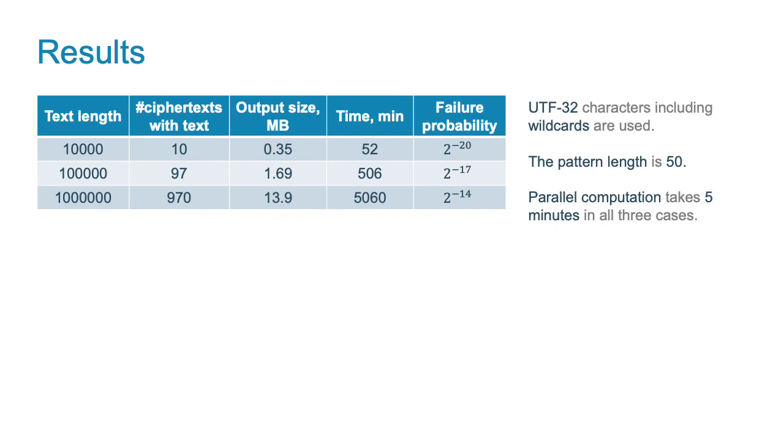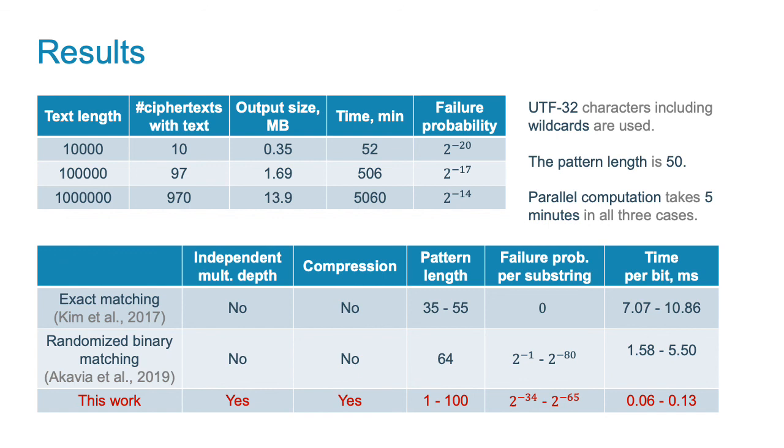We implemented our framework using the HElib library on an average commodity laptop. The texts and the patterns are encoded by UTF-32 symbols with wildcards. In this table, we present timings of matching patterns of length 50, even though in the paper we consider patterns of a running length from 1 to 100. Our algorithm can be easily parallelized such that the running time of each row in the table can be reduced to 5 minutes. In comparison to prior work, our matching algorithm is up to 12 times faster at the cost of lower failure probability. In addition, only our framework provides the first matching algorithm whose depth is independent of the pattern length and a compression algorithm for the matching results.